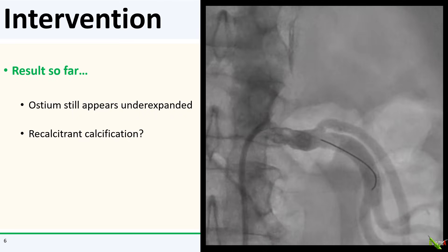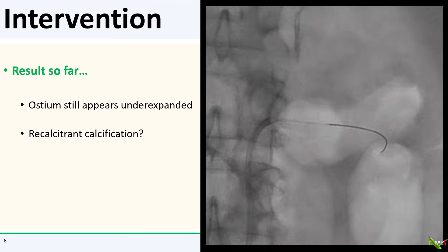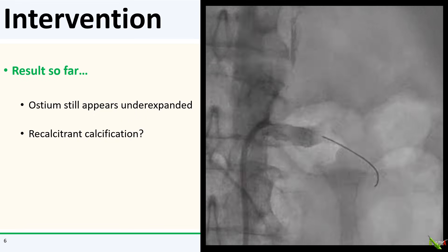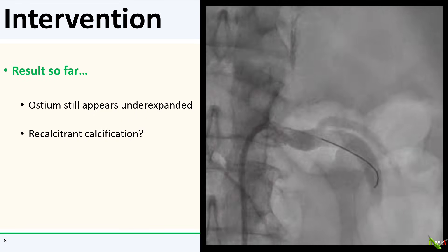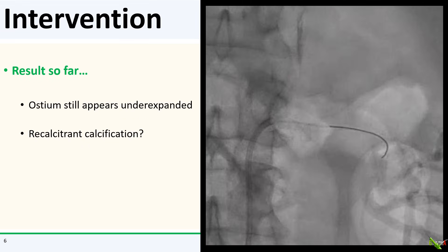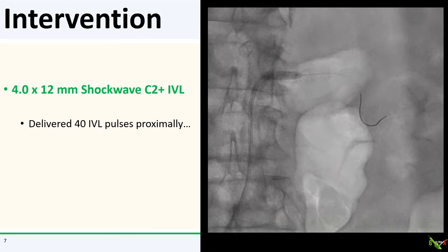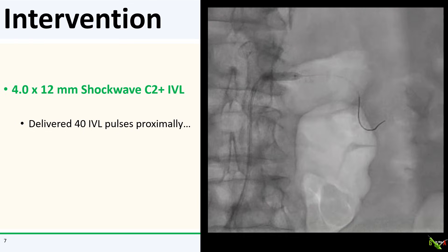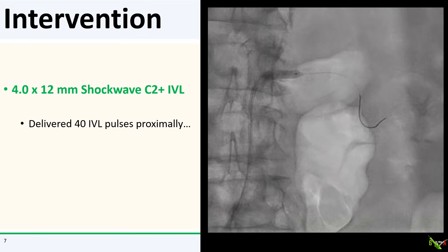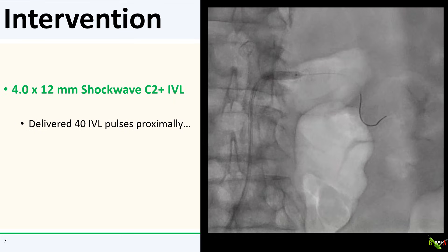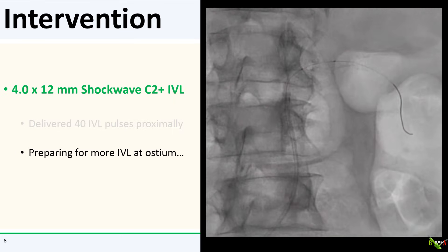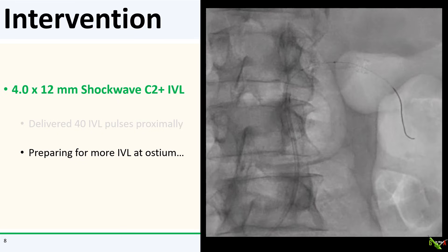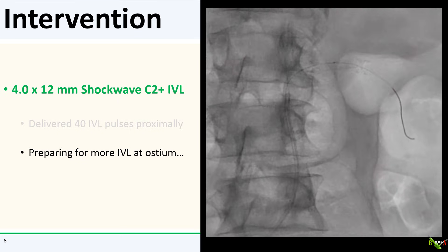Here is the angio after post-dilation. The left renal artery overall looks better. The mid and distal parts of the stent look pretty good, but the ostium still looks a bit underexpanded, possibly due to some degree of calcification there. So it was decided to proceed with intravascular lithotripsy. A 4.0 by 12-millimeter shockwave IVL balloon advanced very easily into the proximal segment of the stent, and 40 pulses were delivered. The shockwave IVL balloon was then pulled back to the ostium to deliver more pulses, and here is the fluoro image showing the balloon position.